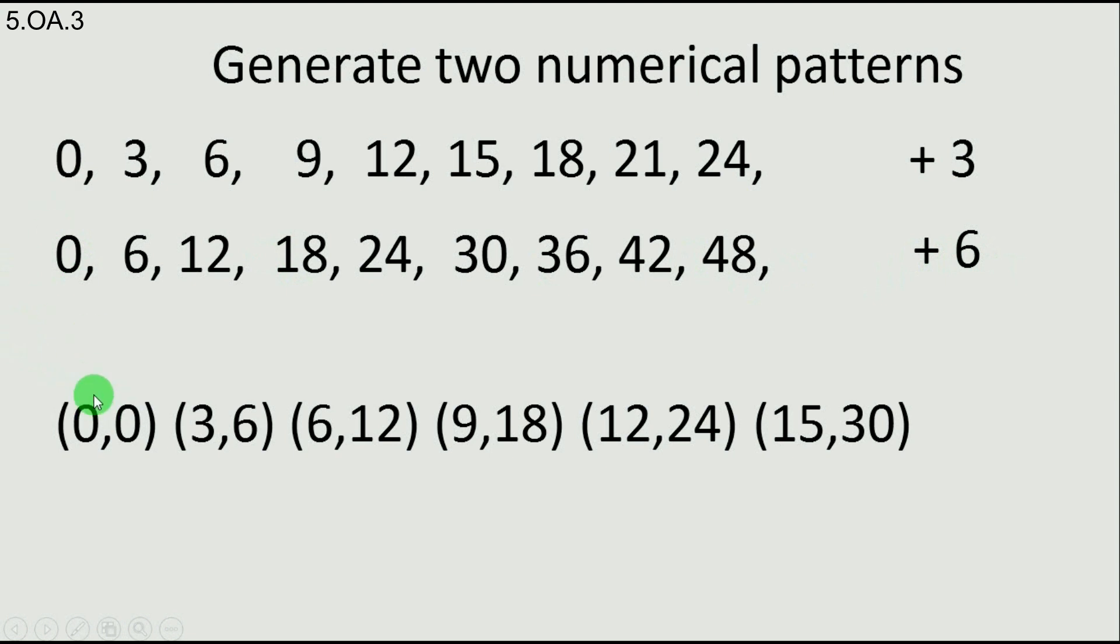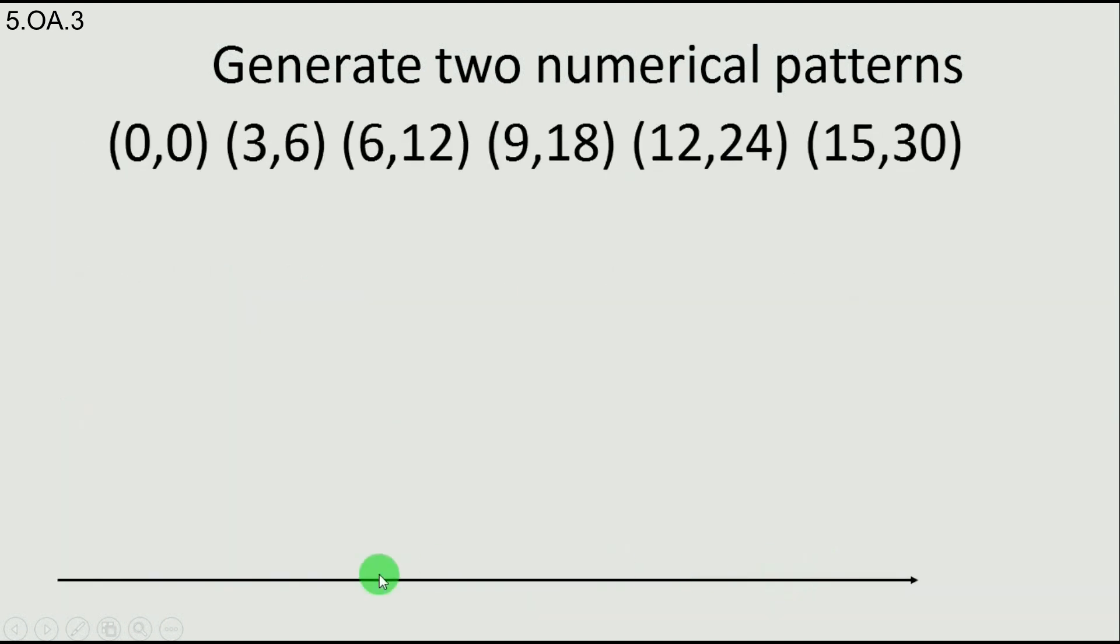Let's form again the pairs. Take the first element from the first pattern and the first element from the second pattern and form a pair. Then take the second element from both patterns and form a pair, then the third element from both patterns and so on. We have those pairs. Now what do we do with them? We draw them. We have a ruler with all the numbers on it. We draw the first number from each pair on this ruler: 0, 3, 6, 9, 12, 15. Remember that every first number from each pair is actually the number from the first pattern.